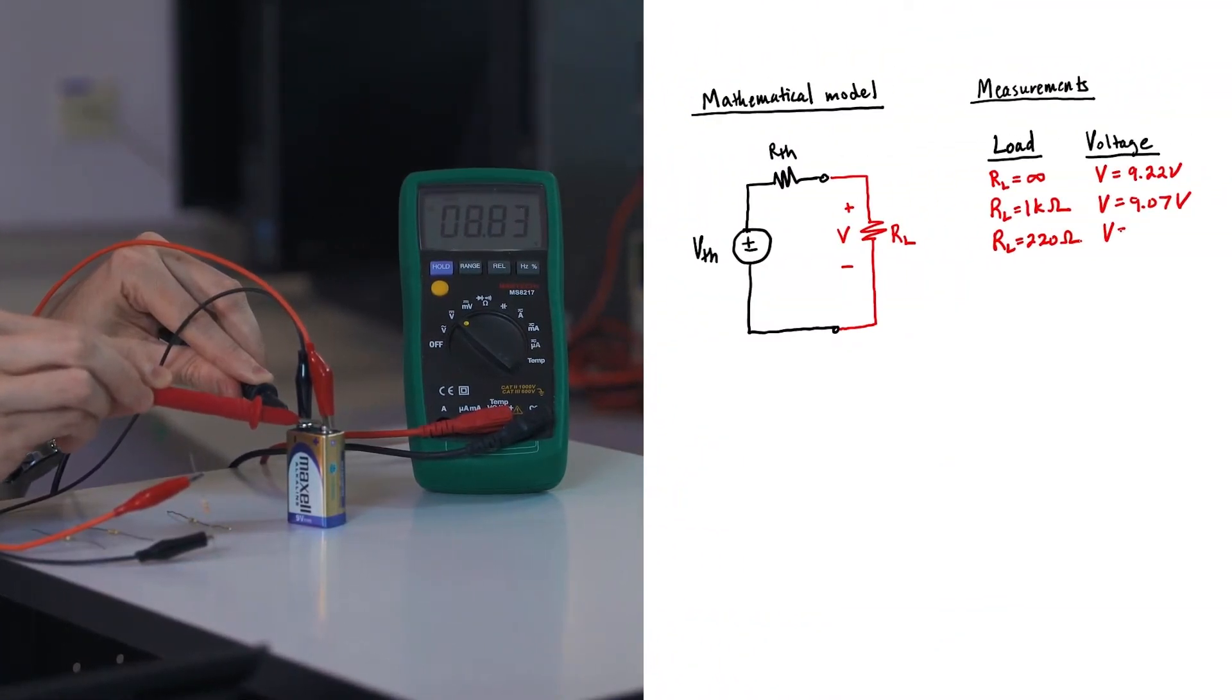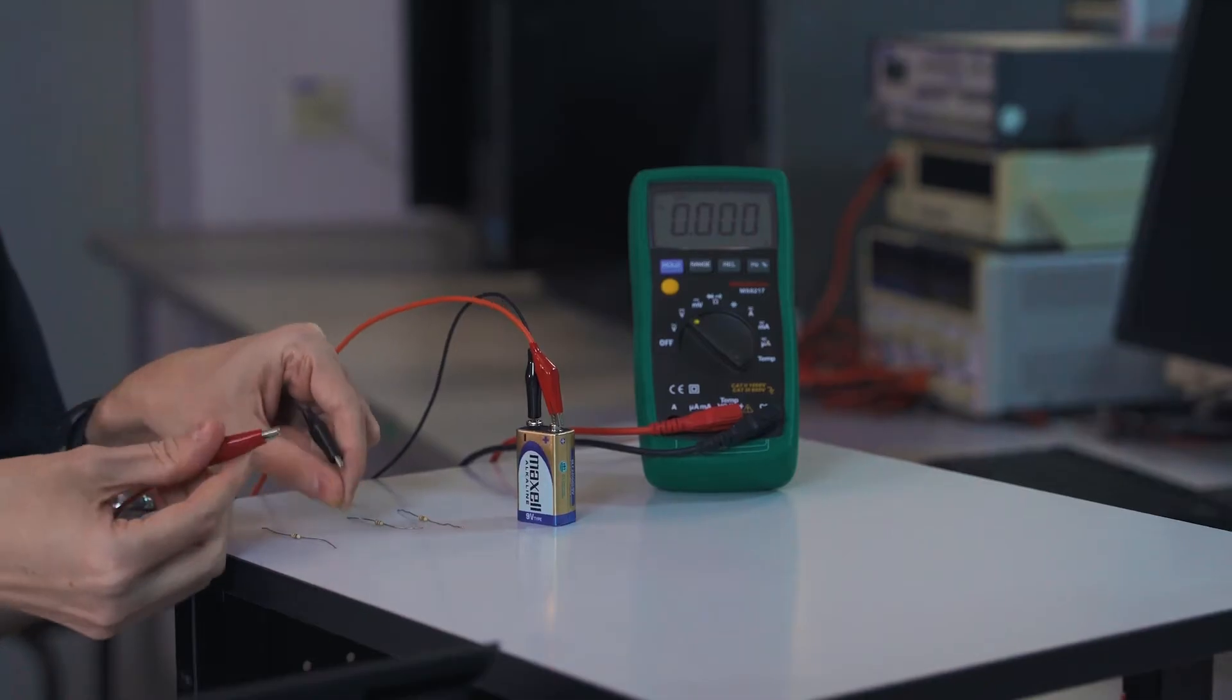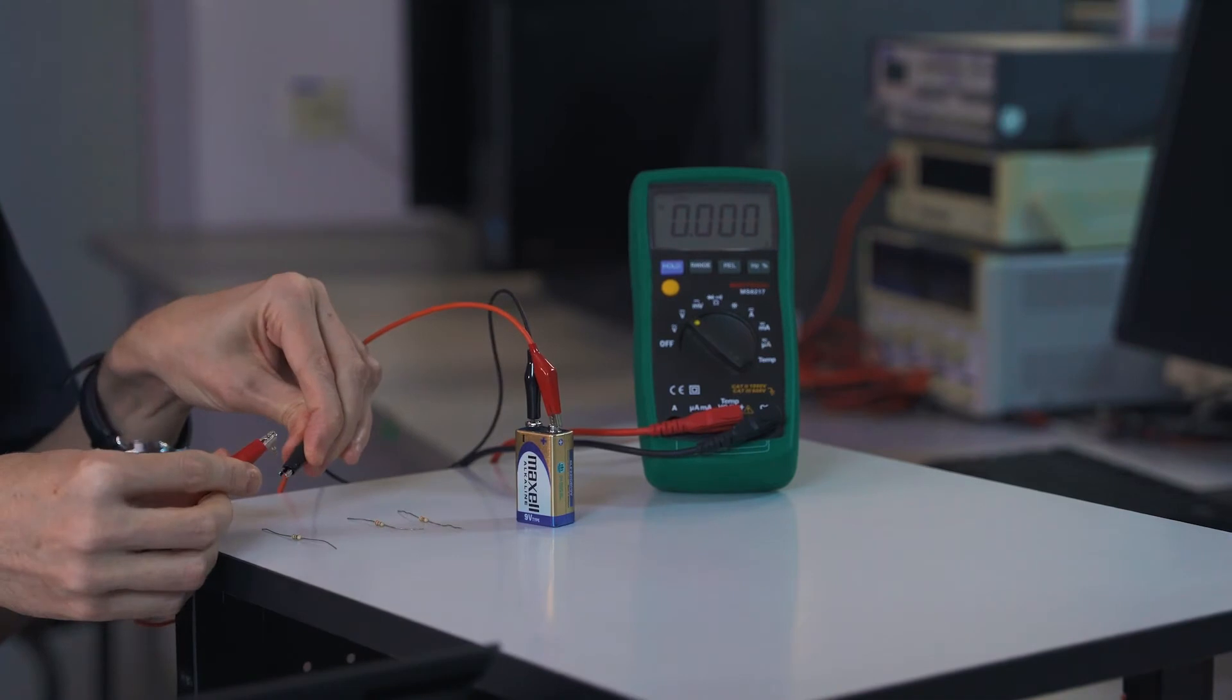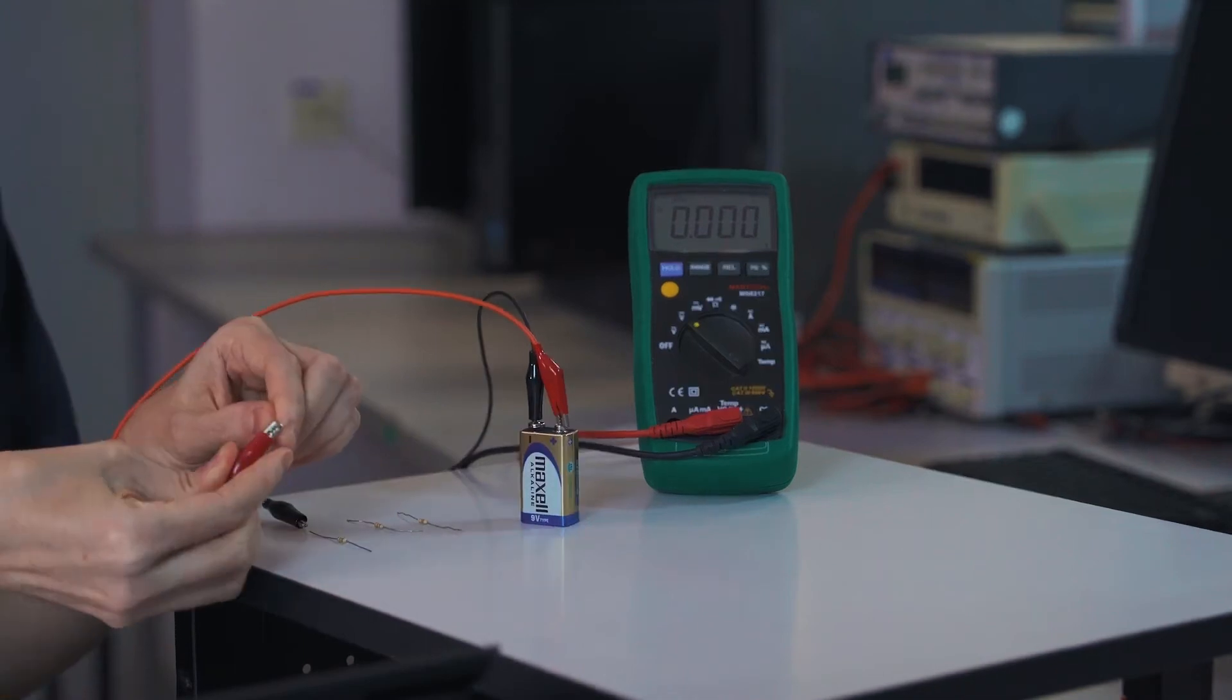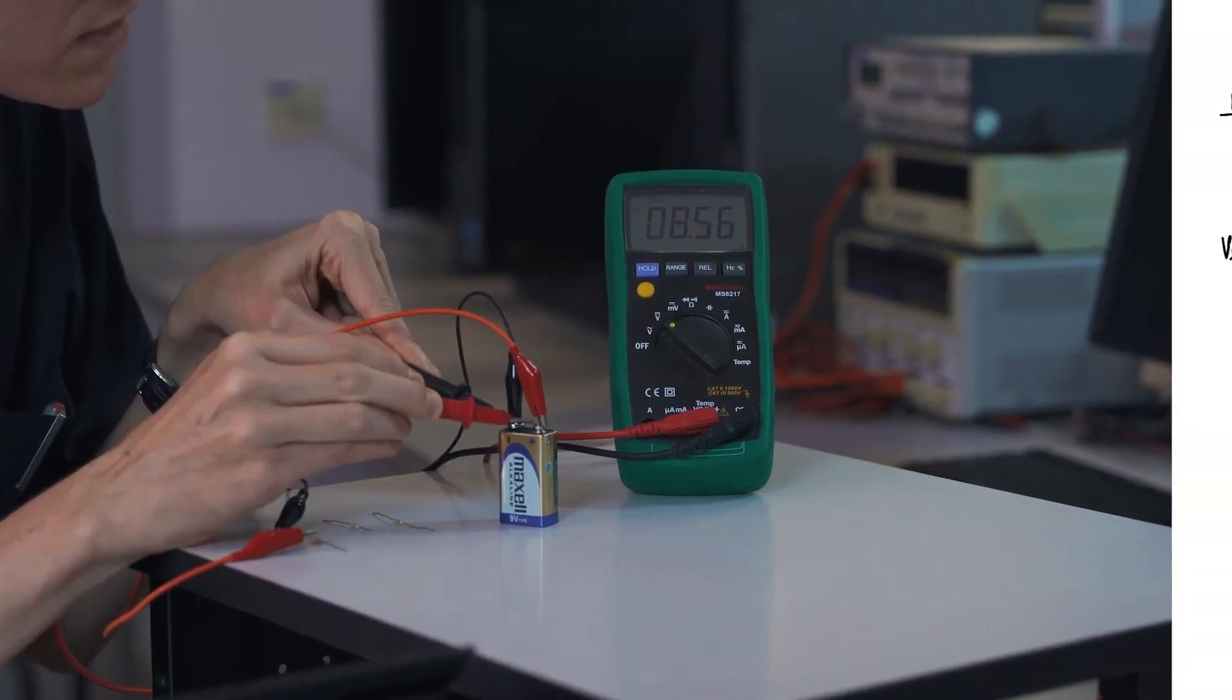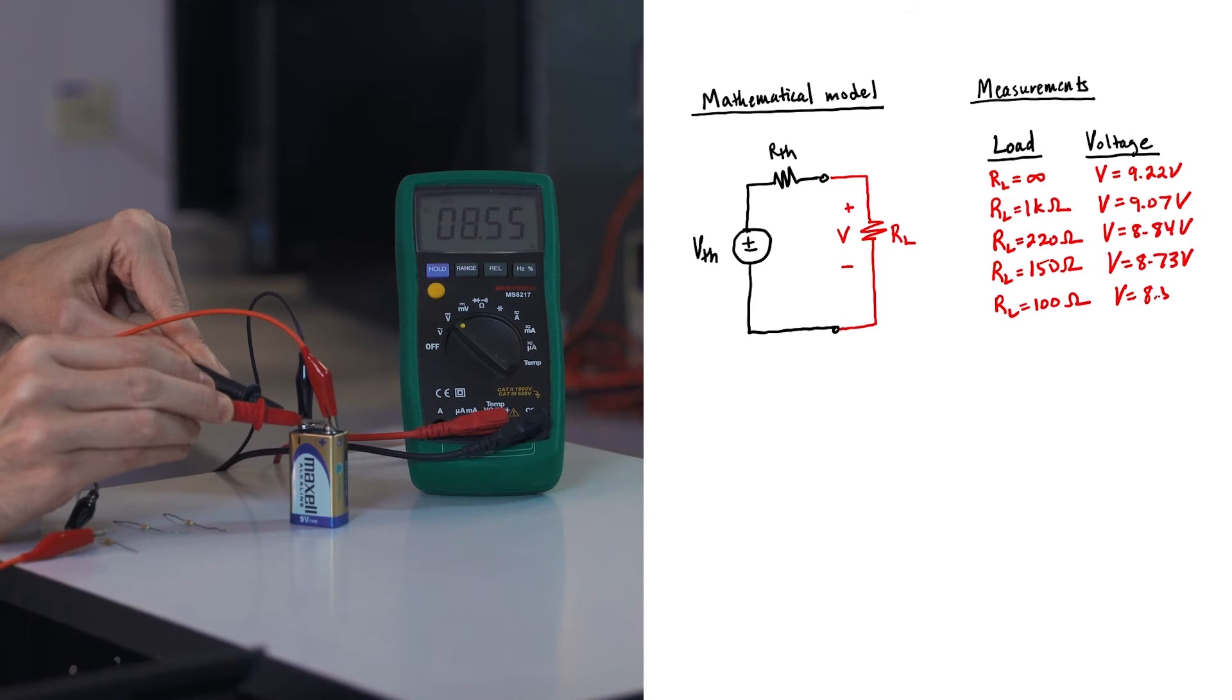Our voltage is now 8.84 volts. Next we have a 150 ohm resistor, 8.73 volts. Finally I have a 100 ohm resistor. Our voltage is 8.55 volts.